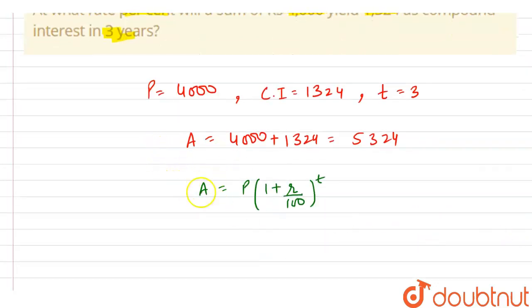Here we are having the value of A that is 5324, so now let's put 5324 and this equals the value of P that is given as 4000 into 1 plus R by 100 whole raised to power t, and at place of t we are having three.